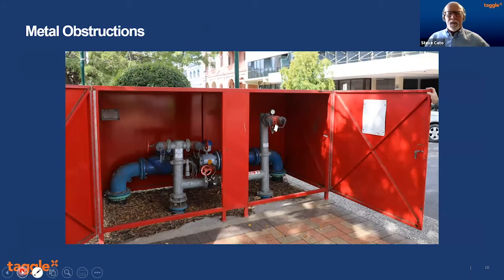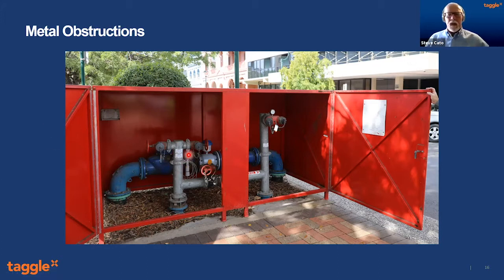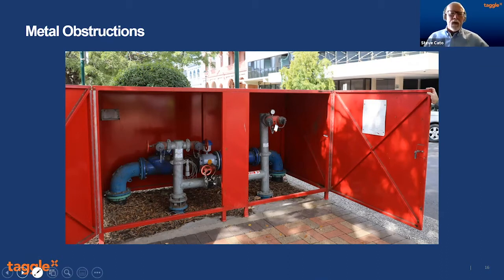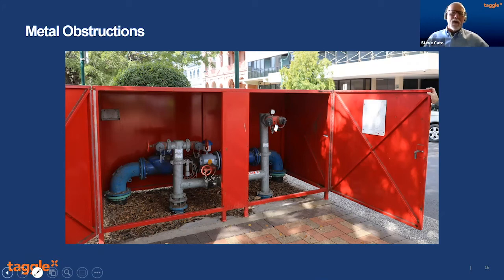Metal obstructions: this is almost as bad a metal obstruction as you can get — a big metal box with a tag inside. Fortunately in this particular instance, this big metal box has got a gap down through the bottom, so signals will bounce down through there. The receiver is actually quite close in that instance. It's not that you can't get out of those sorts of things — it's just that you have to select the right tag, put it in the right place, and check it before you go.